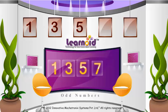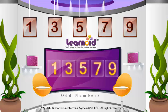If numbers are ending with 1, 3, 5, 7, 9, then they are odd numbers. Let's see some examples of odd numbers.